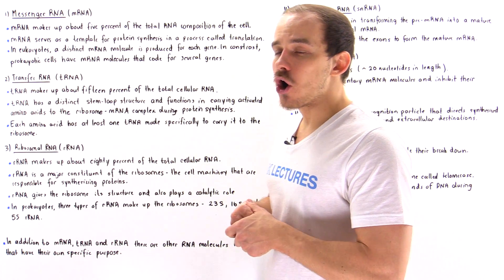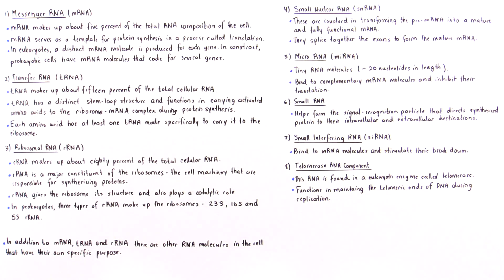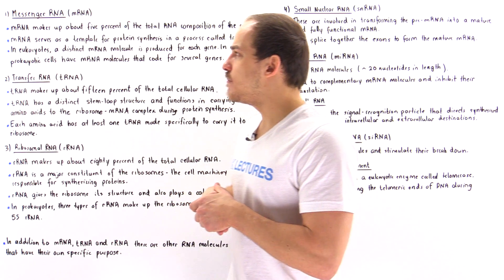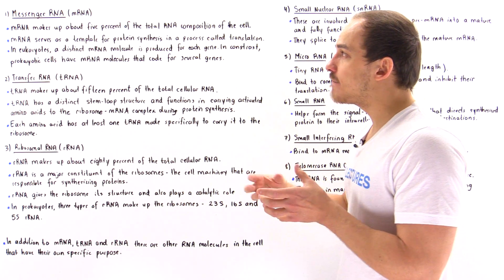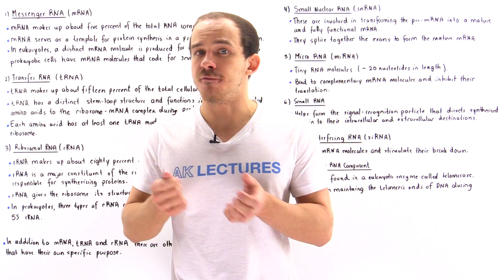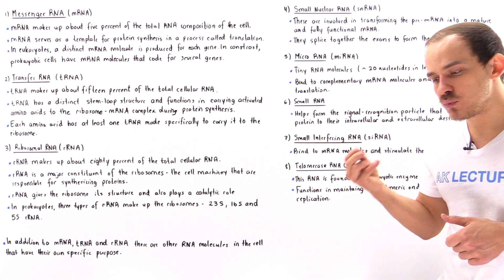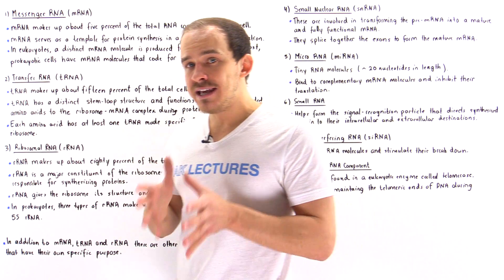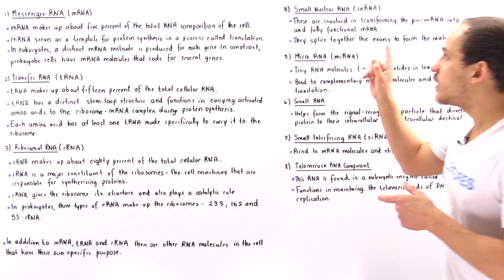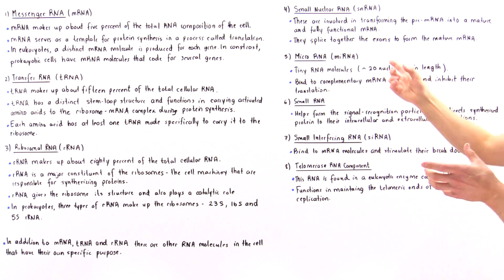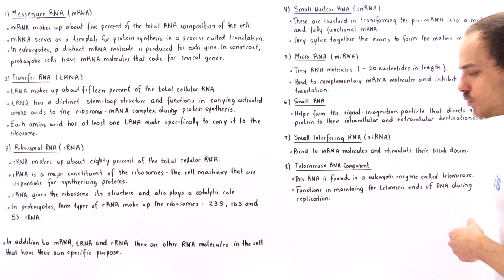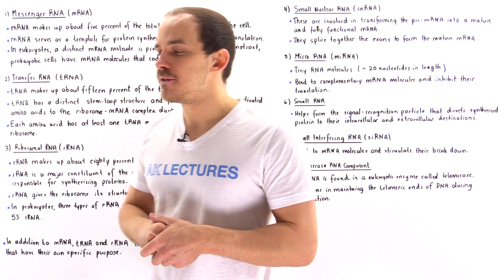Let's discuss what some of these RNA molecules are, beginning with small nuclear RNA, or snRNA. Earlier, when I discussed the messenger RNA molecule, I said that in eukaryotic cells we actually have to first modify the pre-mRNA molecule before it becomes fully mature and functional. One way we modify it is by removing the introns and splicing together — gluing together — the exons. The function of small nuclear RNA is to splice together the exons to form that fully mature mRNA that can then be used by the ribosomes to synthesize that given polypeptide chain.